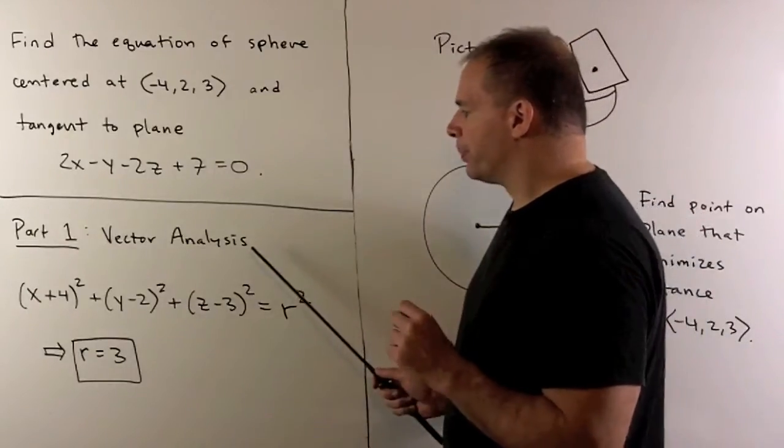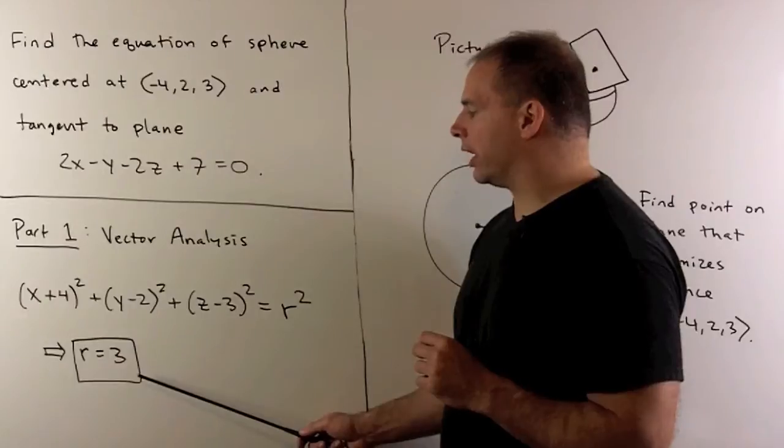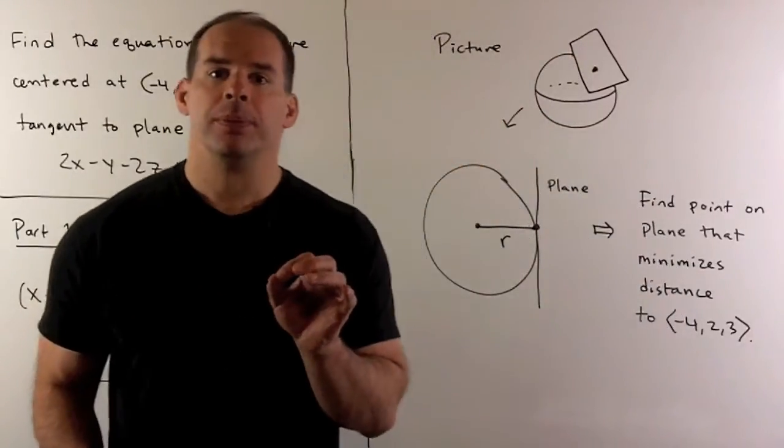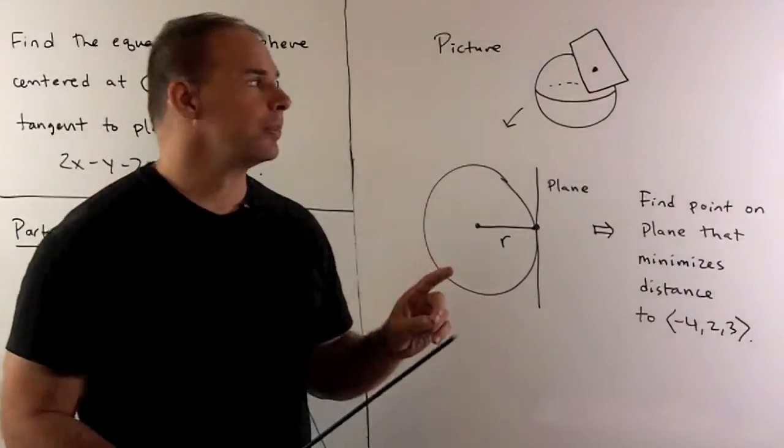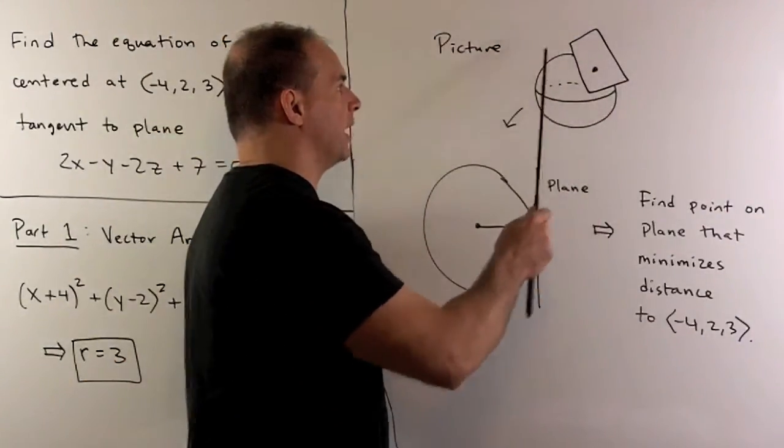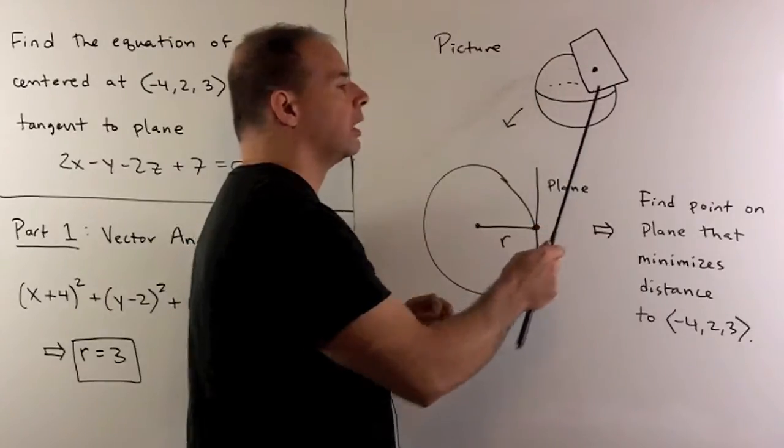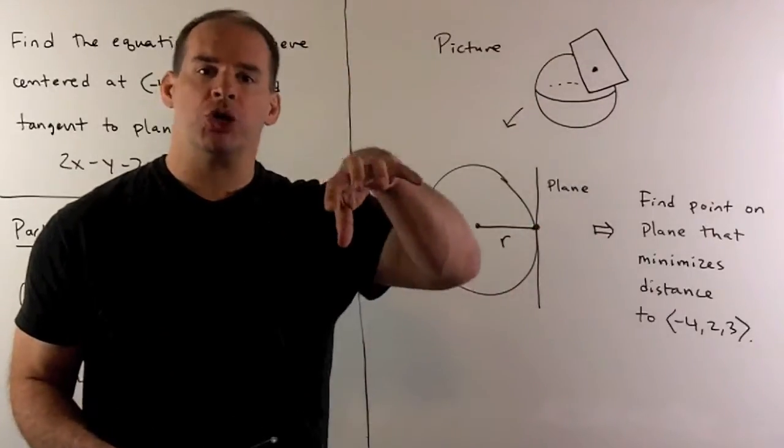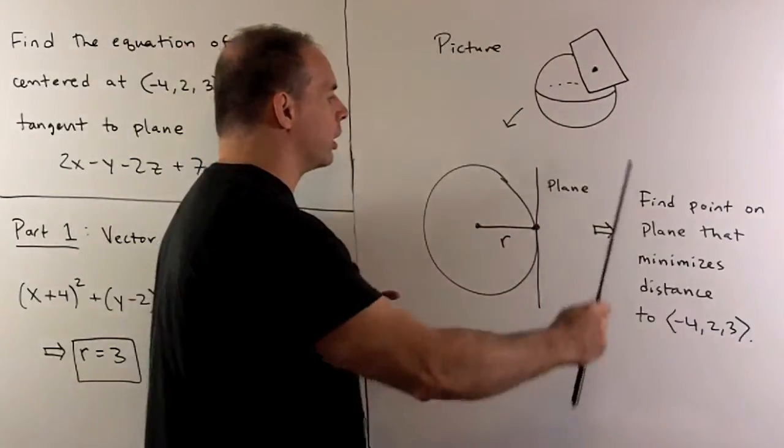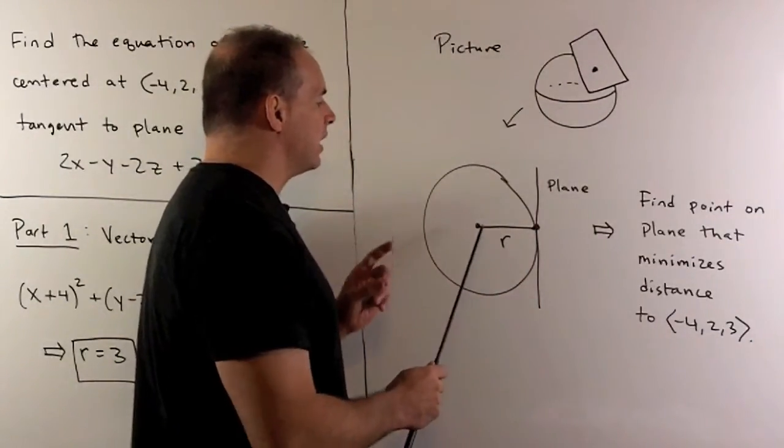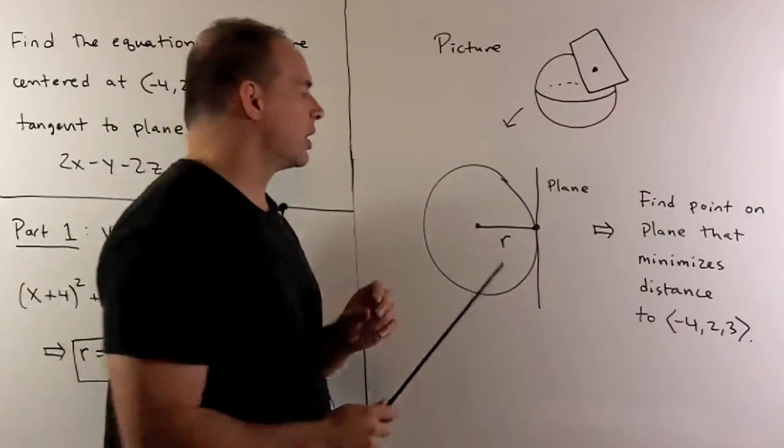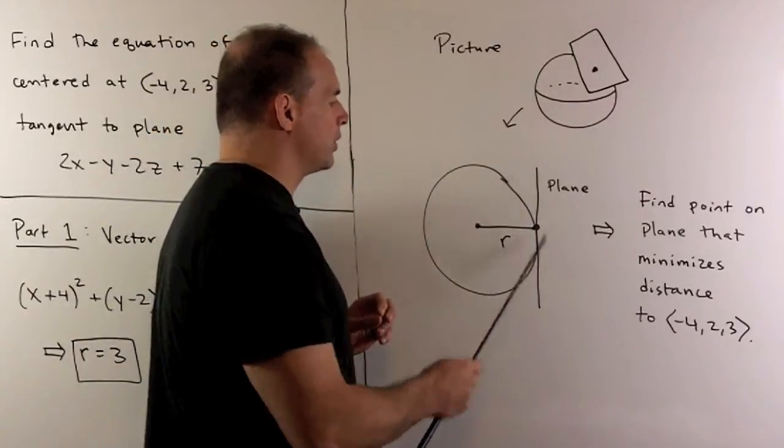Using vector analysis, we saw that the radius was equal to 3. Now, the key step, we had to draw the picture. So here I have a picture of a sphere. I put in a tangent plane to a given point. We want to move our picture around so that we have the plane perpendicular to the blackboard. Then I see that the radius is going to be the smallest distance among all distances from our center to points on the plane.